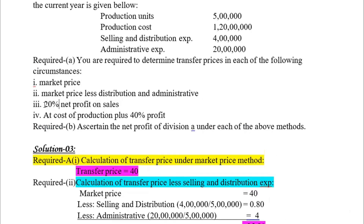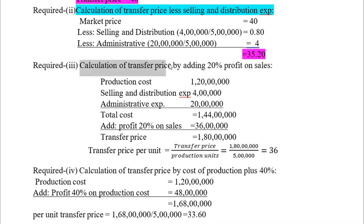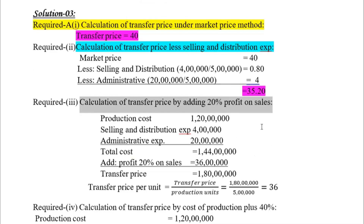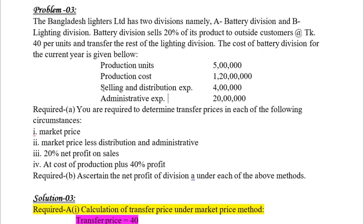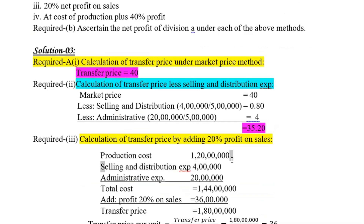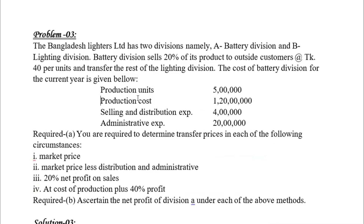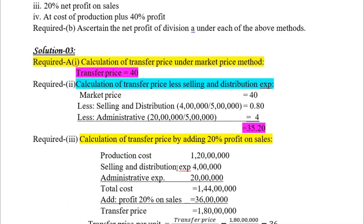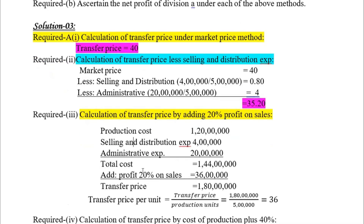For method three, 20 percent profit on sales. Calculation of transfer price by adding 20 percent profit on sales. Production cost plus selling expense plus administrative expense gives the total cost. Then a 20 percent profit on sales is added to arrive at the transfer price.